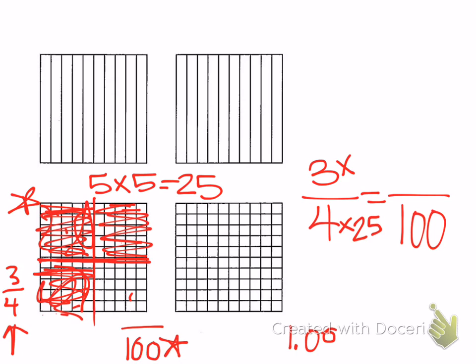Whatever I do to the bottom, I have to do to the top. Now, I have three times twenty-five. Where I think to myself, what are three quarters? Three quarters is seventy-five cents. But if I need to, I can always set up a multiplication problem to figure that out. And I get seventy-five.